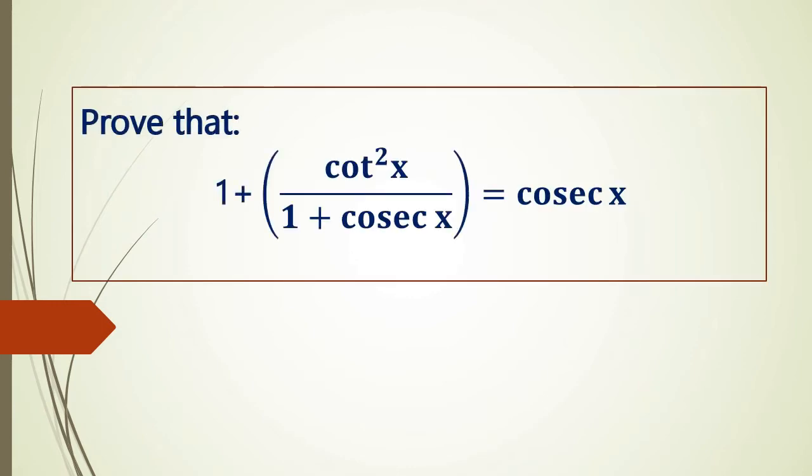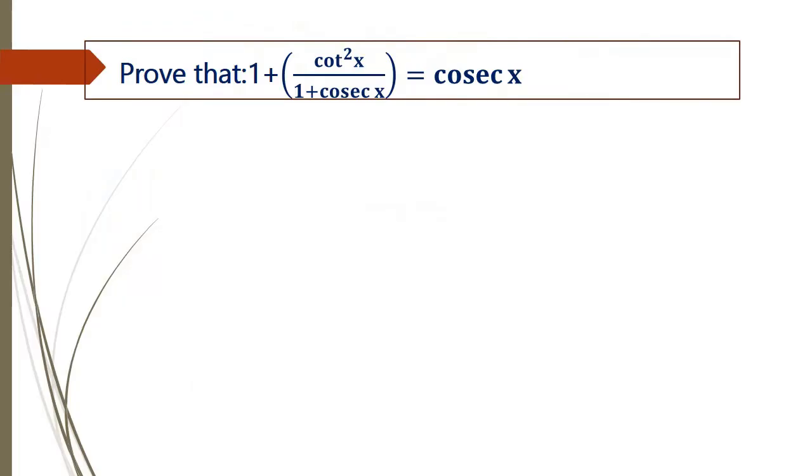In trigonometry, prove that 1 plus cot squared x divided by 1 plus cosec x equals cosec x. Okay, now we have to prove the given equation.